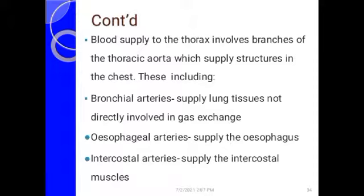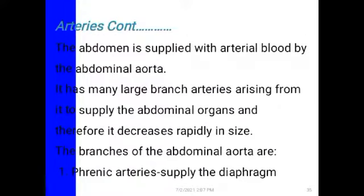The blood supply to the thorax involves branches of the thoracic aorta: the bronchial arteries supplying the bronchi in the lungs, the esophageal arteries supplying the esophagus, and the intercostal arteries supplying the intercostal muscles that hold the ribs together and assist in respiration. The abdomen is supplied from the abdominal aorta.